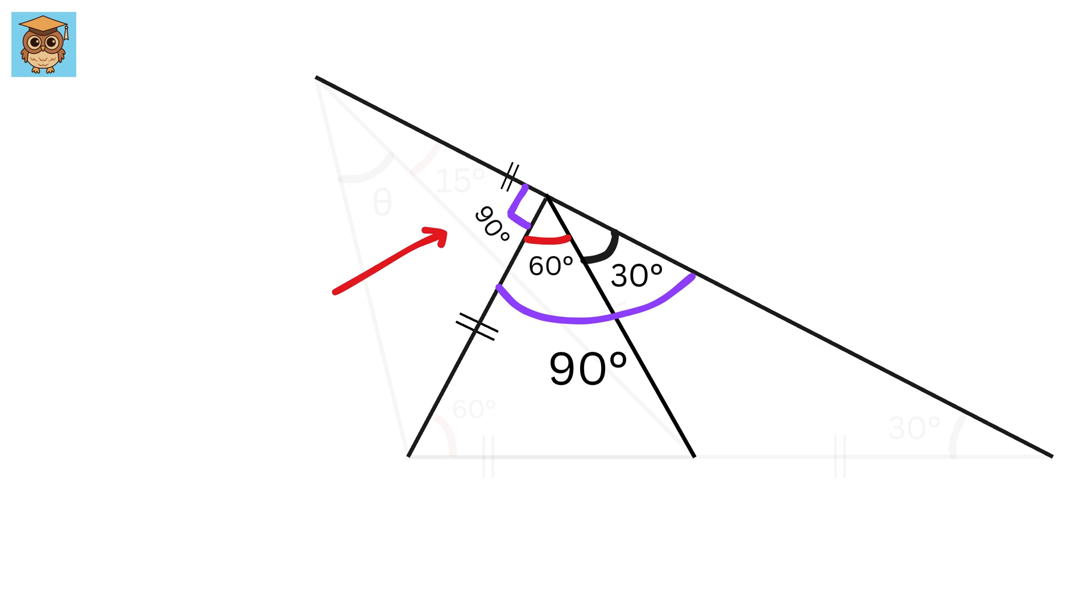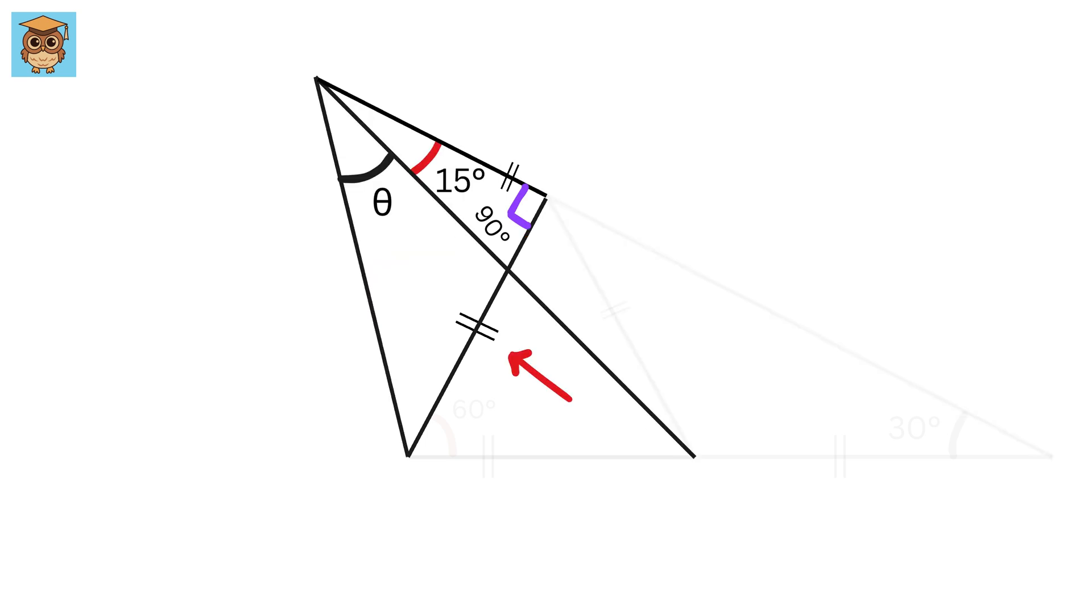Therefore, this will also be 90 degrees. Now, this length is the same as this length. So, this will also be, yes, you again guessed it right. It will also be an isosceles triangle. My god. So many isosceles triangles in a problem can make you feel acute about your geometry skills.